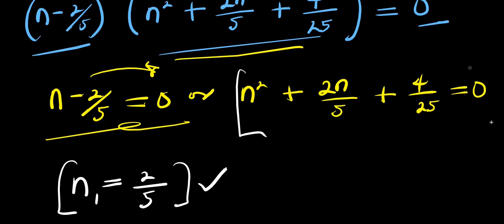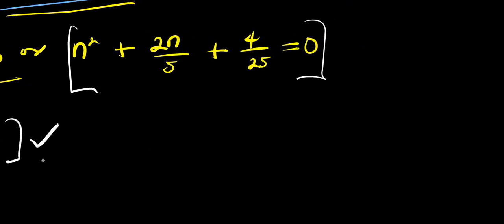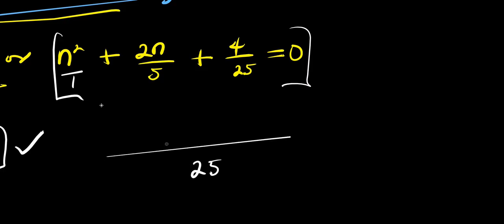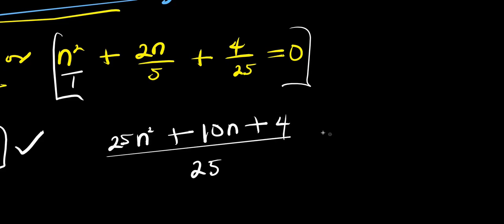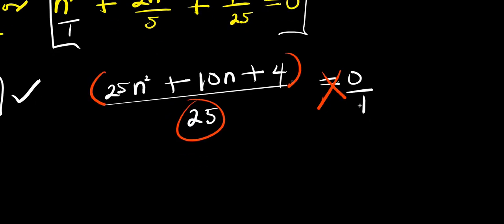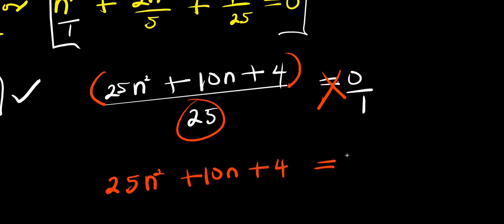Now let's solve the other factor for the other values of n. This is a quadratic equation, but before we solve it, let's find the common LCM, which is 25. Multiplying through: 25n² plus 10n plus 4 equals 0.